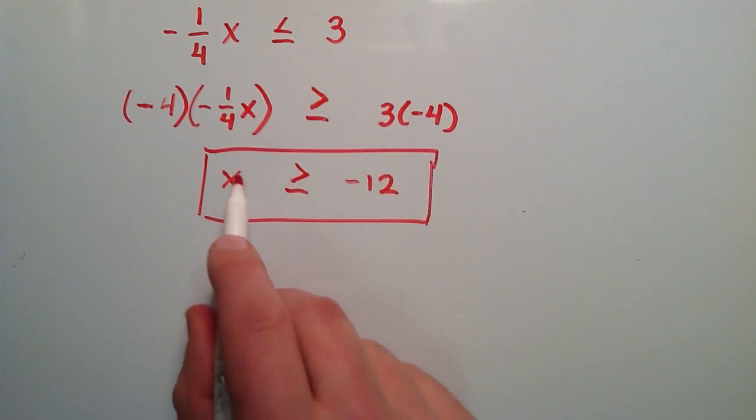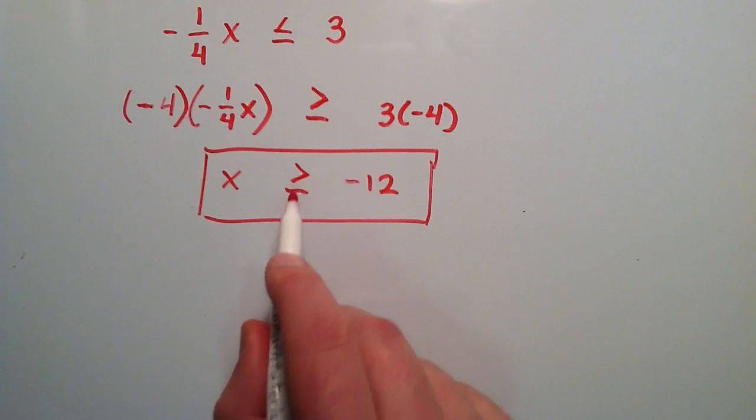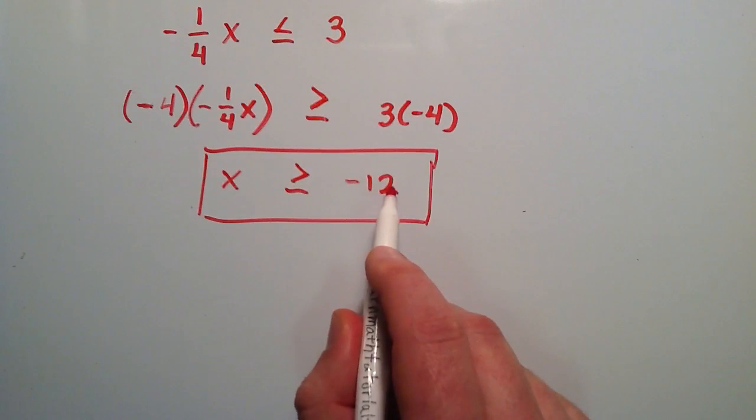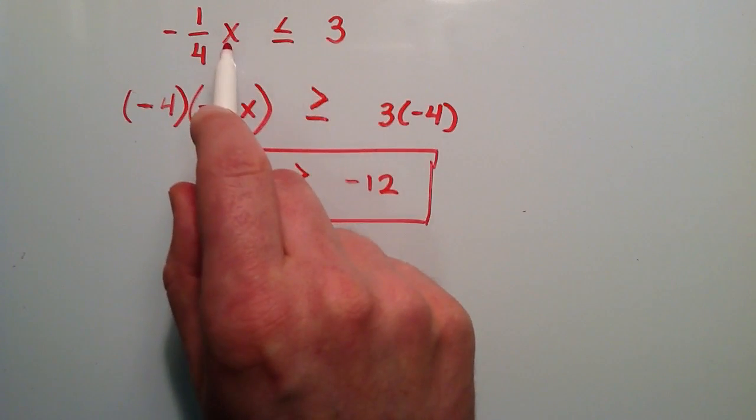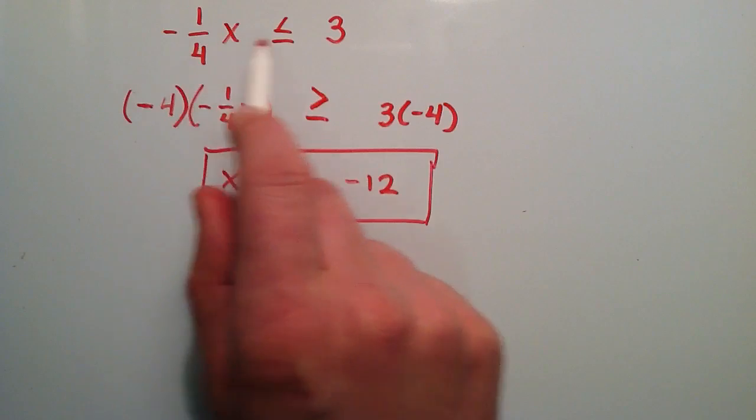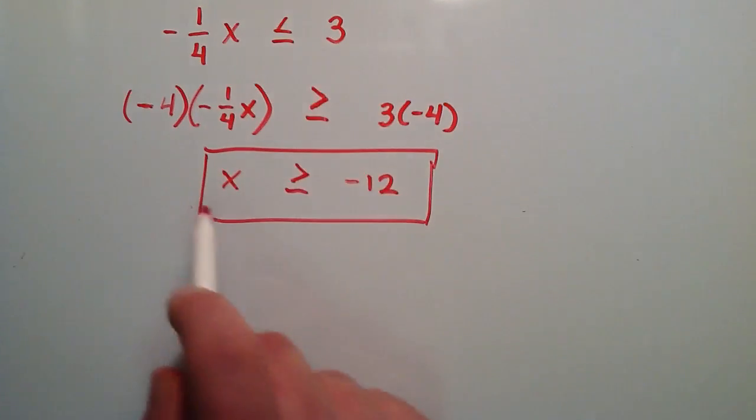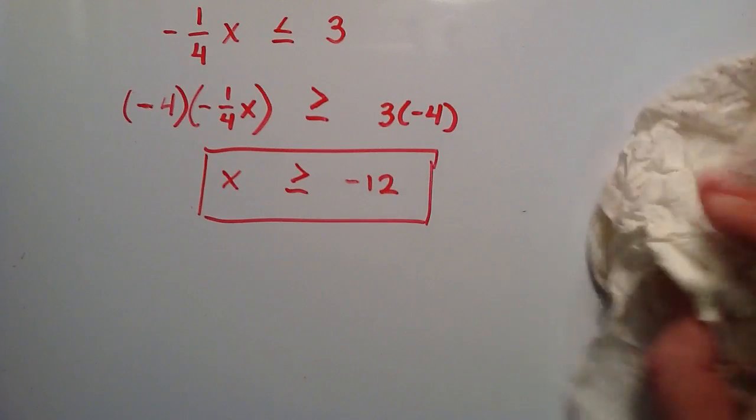So this basically tells us that we can choose any number that is greater than or equal to the number negative 12, place that value where our x is, and this will produce a true statement. So that's our solution for this inequality. Let's go ahead and try a second example now.